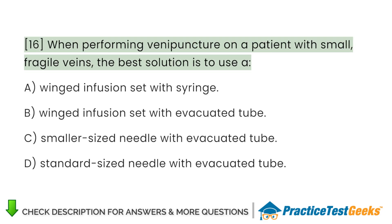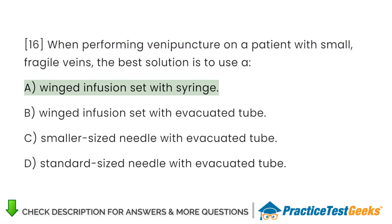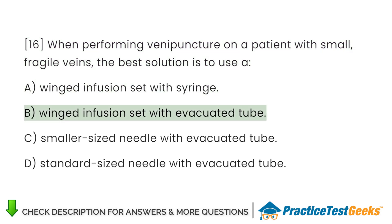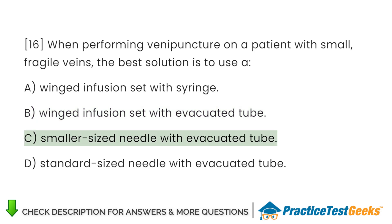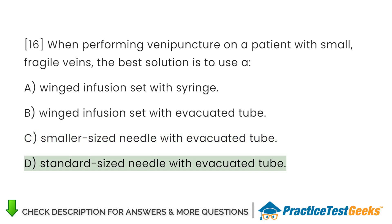When performing venipuncture on a patient with small, fragile veins, the best solution is to use A. Winged infusion set with syringe. B. Winged infusion set with evacuated tube. C. Smaller sized needle with evacuated tube. D. Standard sized needle with evacuated tube.